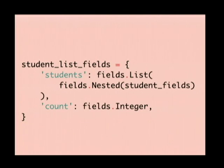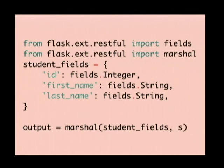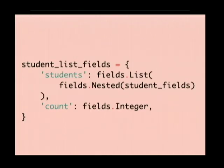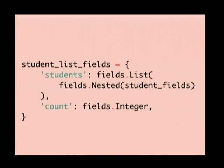It also has a really neat, more powerful feature where you can create list structures and nest field definitions within each other. Here is how we would format a single student, and we can reuse this — we take the student fields mapping and create a list field that says every entry in this list is actually just a student. So we reuse the formatter we already have, and we get this list resource structure pretty much for free.